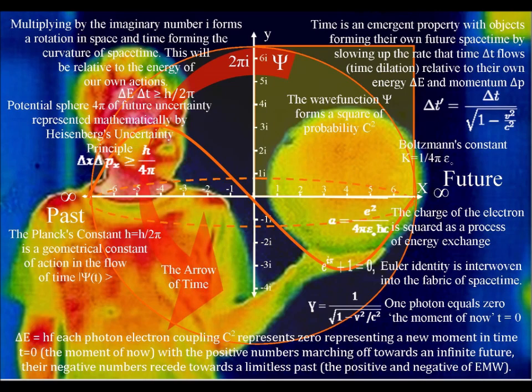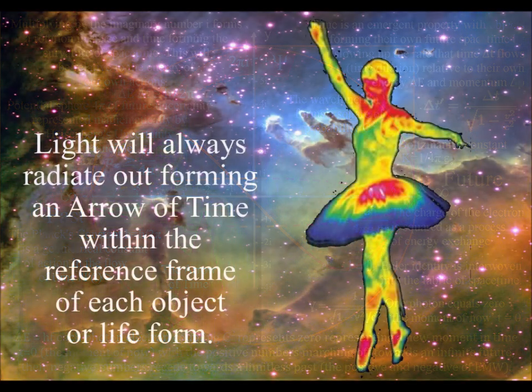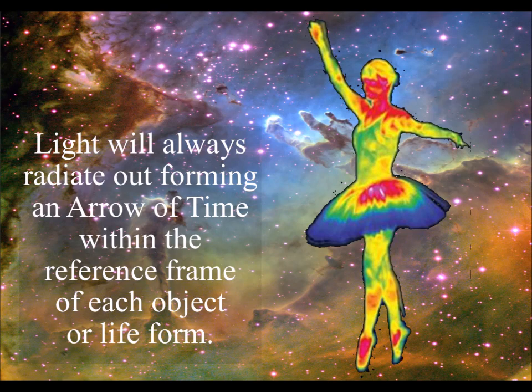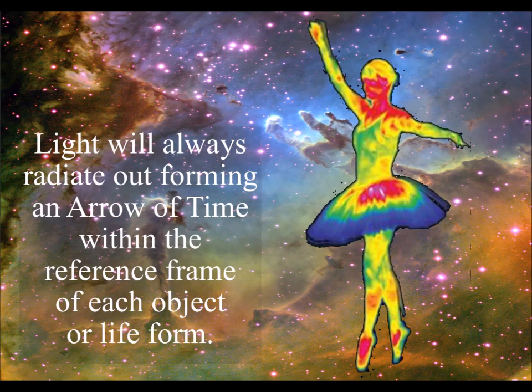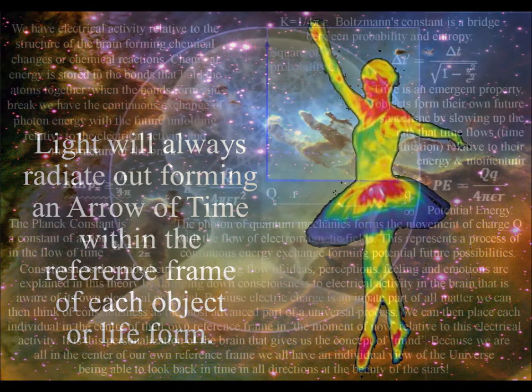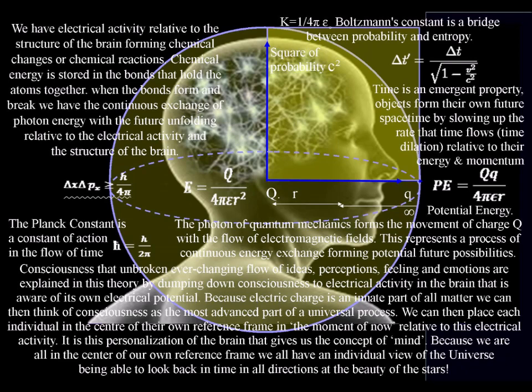Light photon energy is continuously transforming potential energy into the kinetic energy of matter in the form of electrons. Kinetic energy is the energy of what is actually happening. This emergent electromagnetic activity would be fundamental to how the brain produces consciousness.